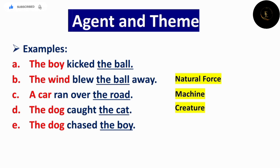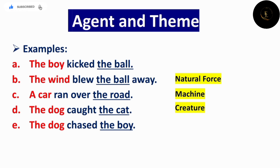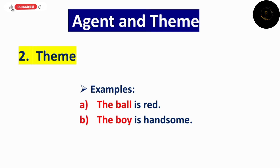'The wind blew the ball away' — wind جب blew تو اس action سے ball effect ہوئی، again ball is theme۔ 'A car ran over the road' — car کے چلنے سے road effect ہوئی، so road is theme۔ 'The dog caught the cat' — cat effect ہو رہی ہے، so cat is theme۔ 'The dog chased the boy' — پہلی sentence میں boy agent تھا، لیکن اس sentence میں boy theme ہے۔ اس کے علاوہ، اگر کوئی بھی entity simply describe کی جائے، جیسے 'The ball is red' — ball theme ہے، 'The boy is handsome' — boy theme ہے۔